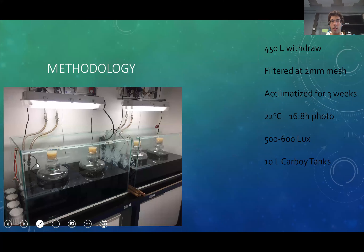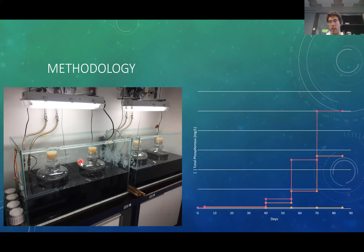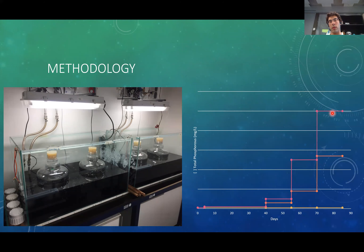Indoor mesocosms were set up in 10-liter carboys, as seen here. We had 18 carboys divided into three treatments of six replicates. The first treatment — the control — received no eutrophication over time. The other two treatments comprised eutrophication curves: one with a strong curve of eutrophication, and one with a very strong curve of eutrophication.